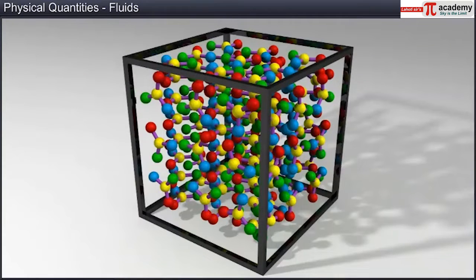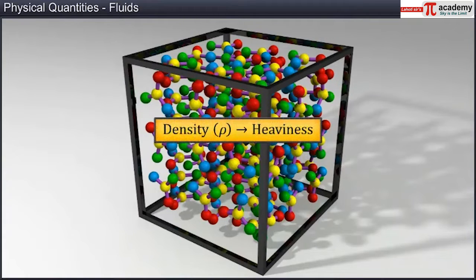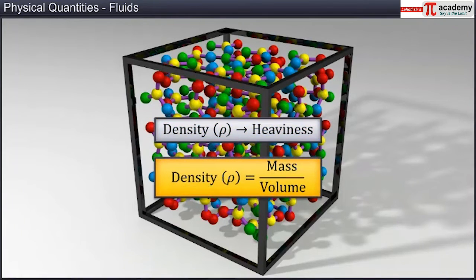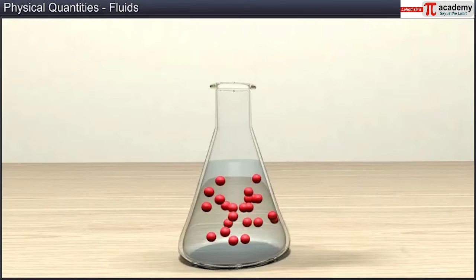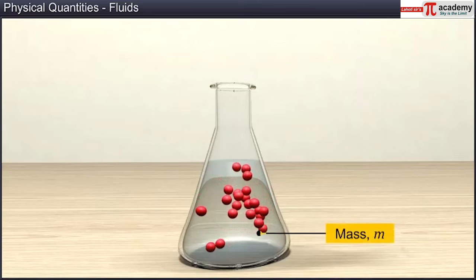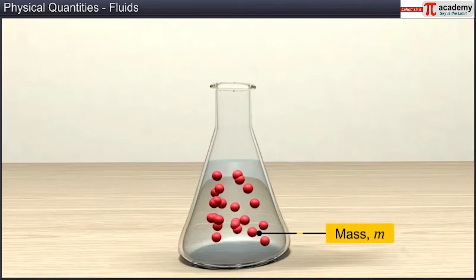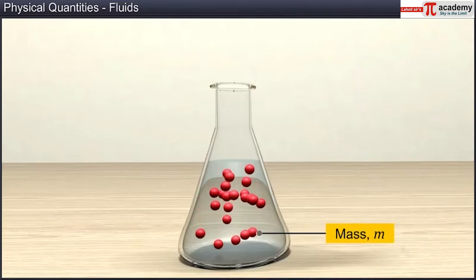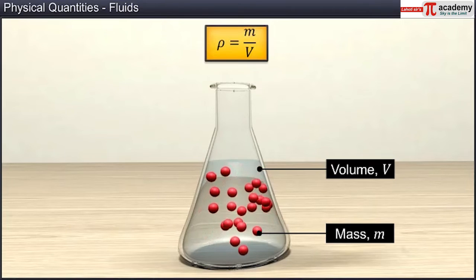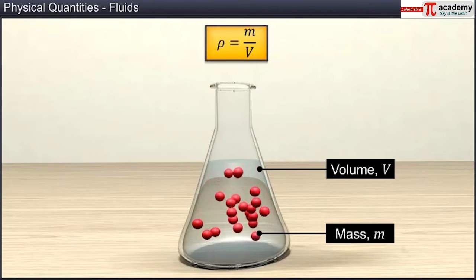Density is represented by Greek letter rho. Density of a substance gives a fair idea of its heaviness. It is defined as mass per unit volume. Density of a fluid of mass m occupying volume v is represented as the ratio of m to v.